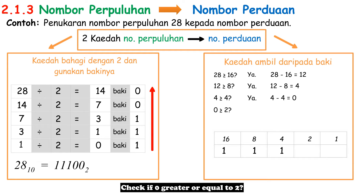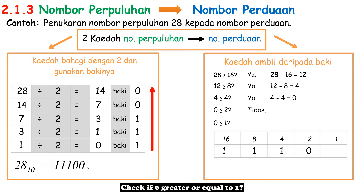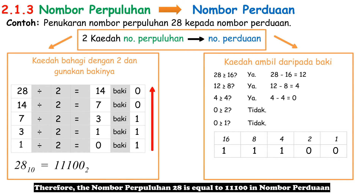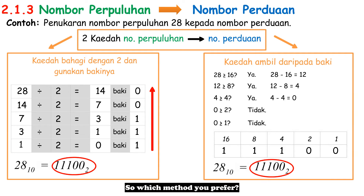Check if 0 is greater than or equal to 2 — no, write 0 below the Nilai Tempat 2. Check if 0 is greater than or equal to 1 — no, write 0 below the Nilai Tempat 1. Therefore, Nombor Perpuluhan 28 is equal to 11100 in Nombor Perduaan. You can see both methods come out with the same answer — so which method do you prefer?